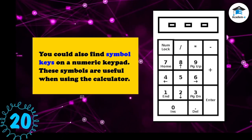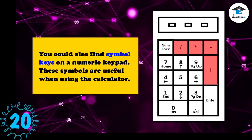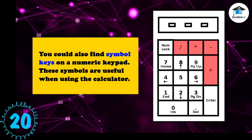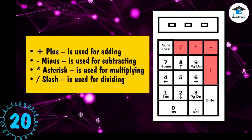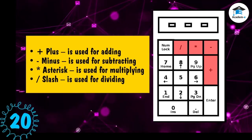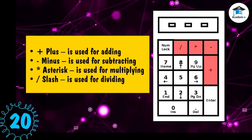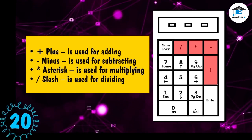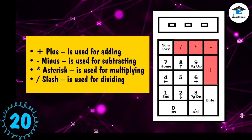You could also find symbol keys on a numeric keypad. These symbols are useful when using the calculator. Plus is used for adding, minus is used for subtracting, asterisk is used for multiplying, and slash is used for dividing.